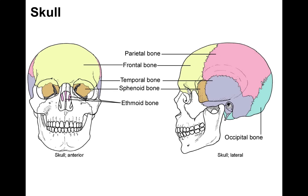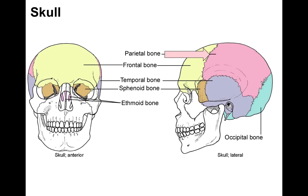Starting off with the skull, here's an illustration of an anterior and lateral view. We have these bones that surround the brain to give it support and protection. First is the frontal bone, which covers the front of the skull and the top of the orbit. Next is the parietal bone — parietal means wall — and it's paired, one on the left and one on the right, forming the wall around a good part of the brain.